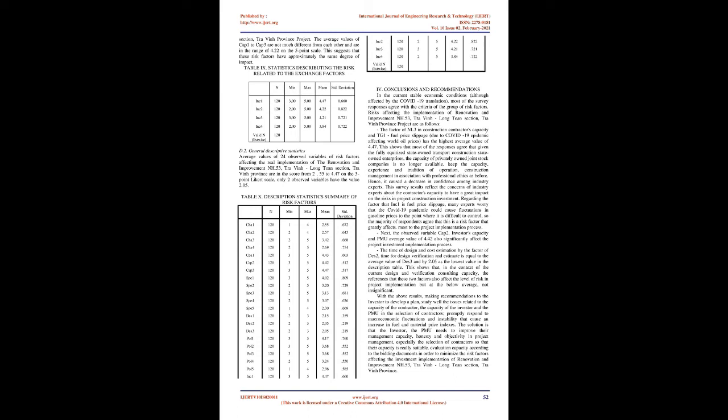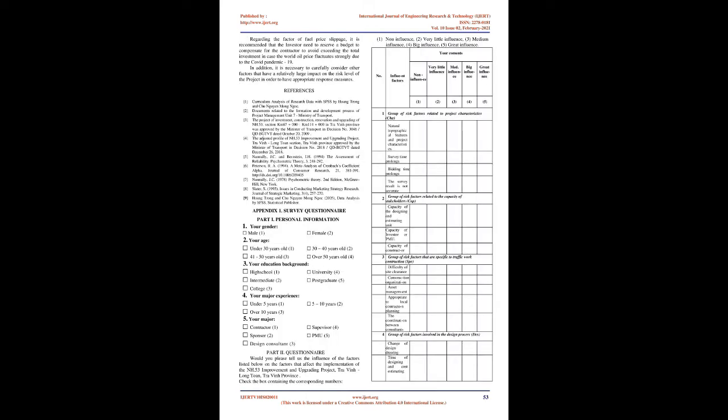The average values of observed variables from SPE1 to SPE5 in the group of risk factors related to the specifics of the traffic construction industry ranged from 2.30 to 4.02 on the 5-point Likert scale. Thus, about half of the survey responses agree with the criteria specific to the transport construction industry affecting the implementation of the Renovation and Improvement NH.53 project. The average values of SPE1 to SPE5 lie in the range from 2.3 to 4.02 on a 5-point scale, suggesting that these risk factors have varying degrees of impact.